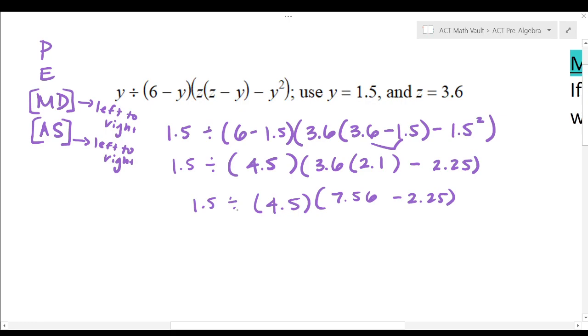I'm bringing this down. And I'm remembering, oh, if I get a division symbol, before I get a multiplication symbol, I'm going to do dividing first. Excuse me. So 7.56 minus 2.25. 5.31. That's 4.5.